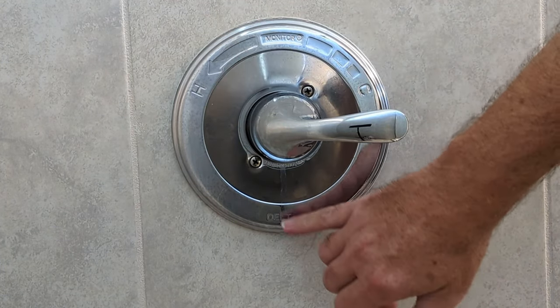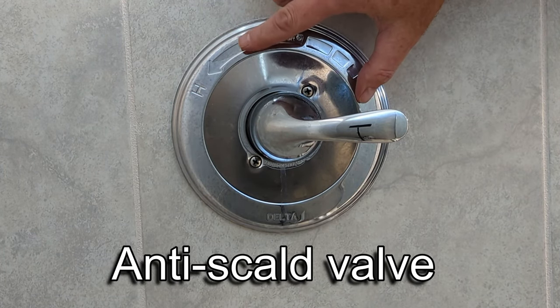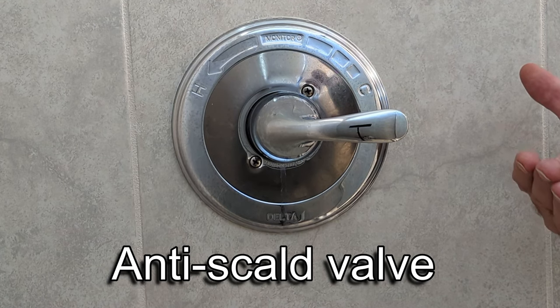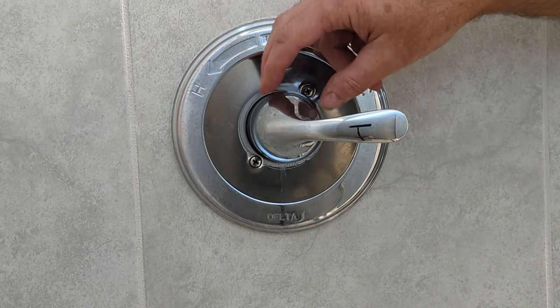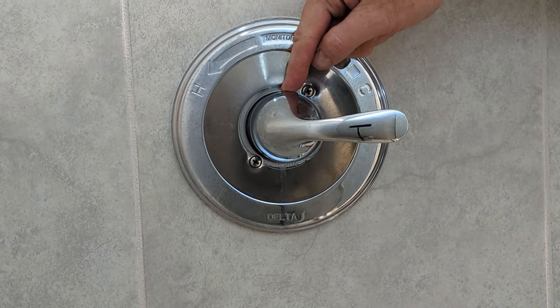What's going on is that these newer valves like this, this is a Delta, I don't know if you can see it right there, but these are called anti-scald valves and what they do is regulate the amount of hot water or the temperature of the water that can come out of the shower.